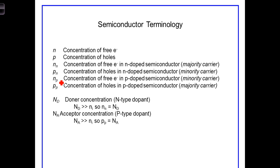The majority of the carriers in N-type or N-doped semiconductor will be electrons. p sub n is the concentration of holes in the N-doped semiconductor. Thermal combination and recombination tells us that there will be a small number of holes existing at any given time,